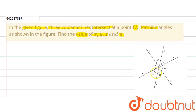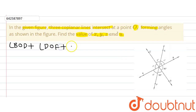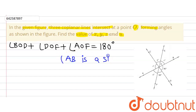Let's do this question. If we observe, angle AOF, angle FOD and angle BOD are lying on a straight line. That means their sum will be 180 degrees. So we can write that angle BOD plus angle DOF plus angle AOF will be equal to 180 degrees, because AB is a straight line and the angle formed by a straight line is 180 degrees.